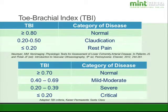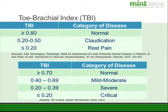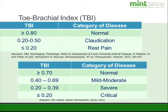Some criteria examples for the toe brachial index: generally normal is over 0.8, 0.7 is also considered normal, less than 0.2 is critical, and anything in between depends on the criteria being used.